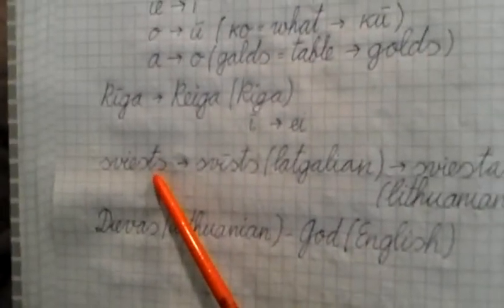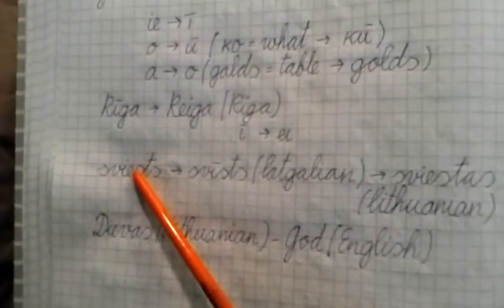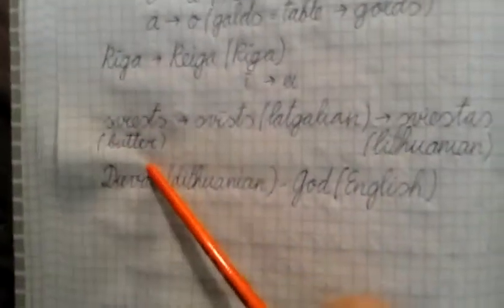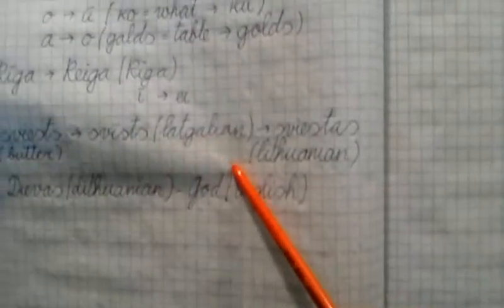And for example, such word sviest. It is butter, and in written here, butter. Sviest becomes Latgalean sviests.